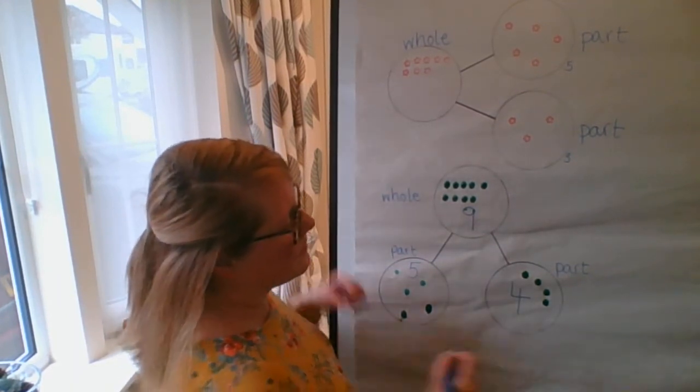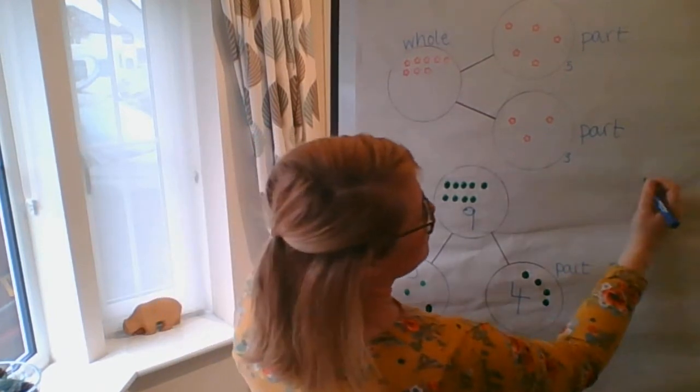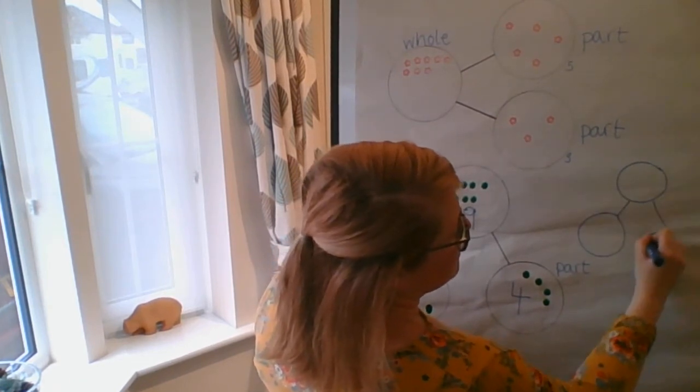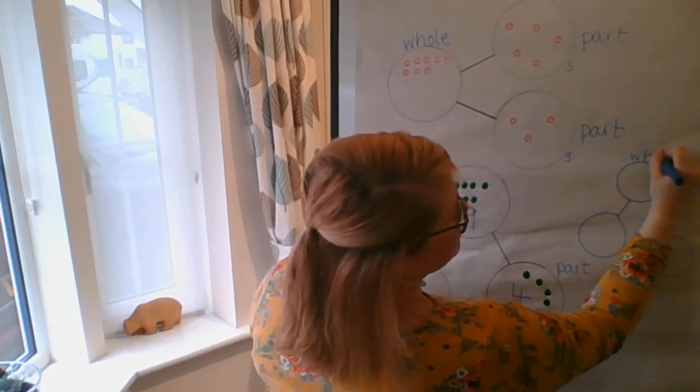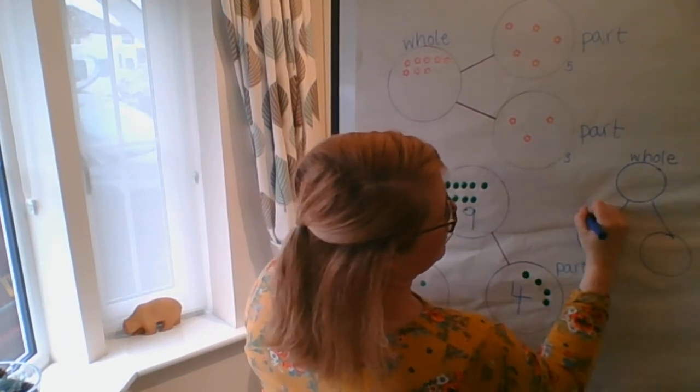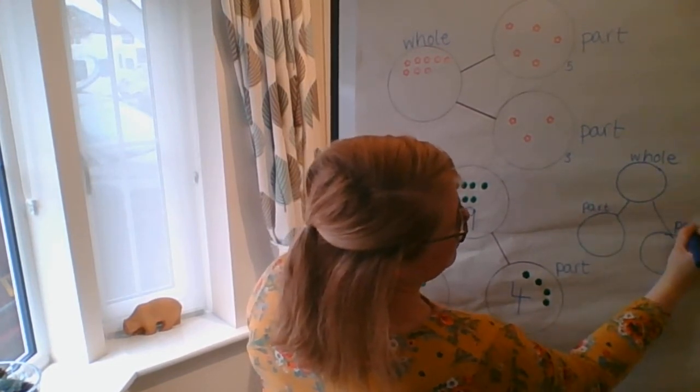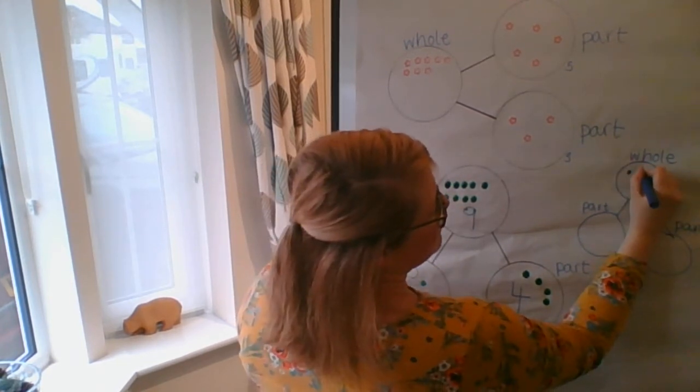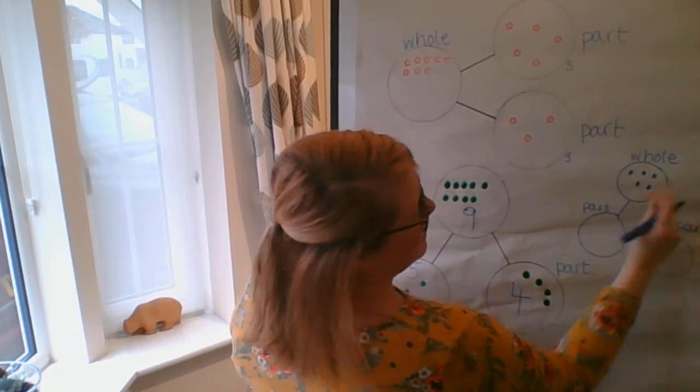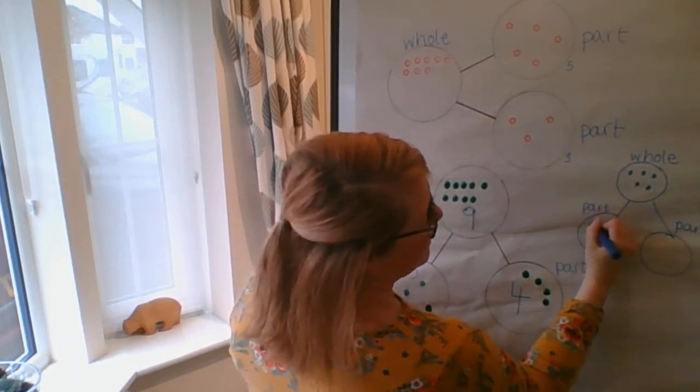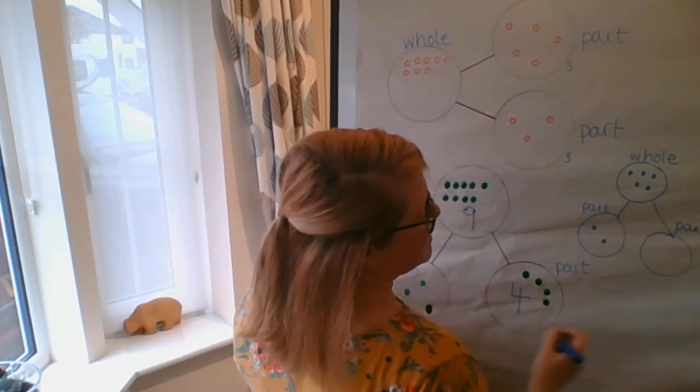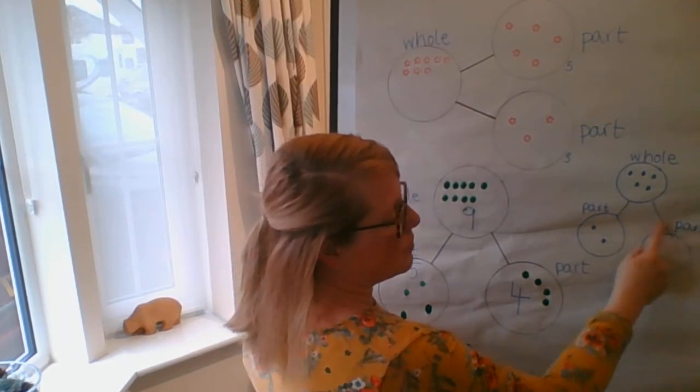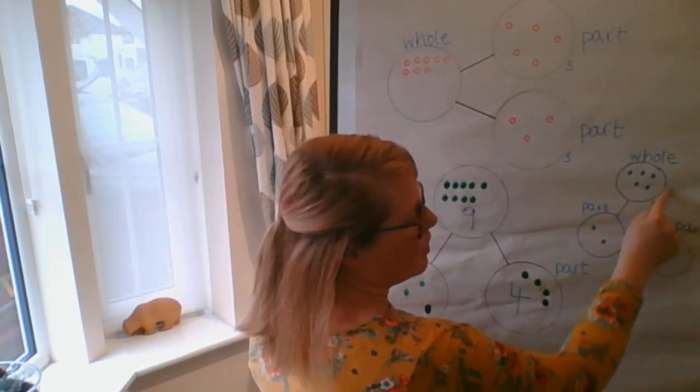Okay. You may have a whole part model that looks like this. So you have your whole and you have a part and a part. So here's your whole, here's your part, and here's your part. And you might have something in here. So you might have a value in the whole. And then you might have a value here. Or it could be in the opposite side. Now it's asking you in this case to work out what's the missing value. So two add something makes the whole value.